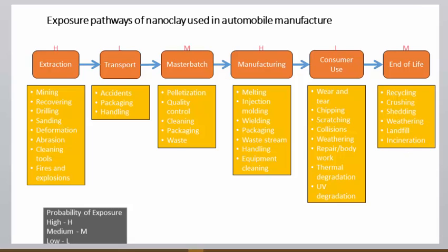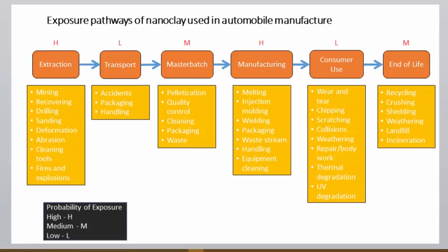Indicate potential exposure pathways that are more probable than others by rating pathways as high, medium, or low. Here, extraction and manufacturing are rated high; master batch and end of life are rated medium; transport and consumer use are rated low.